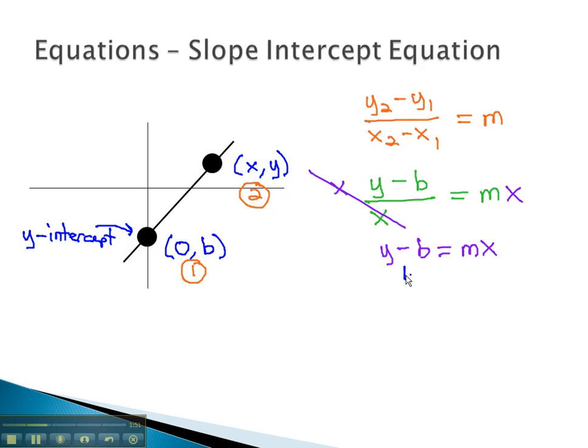Finally, to get the y alone, we will add b to both sides. y is equal to mx plus b.